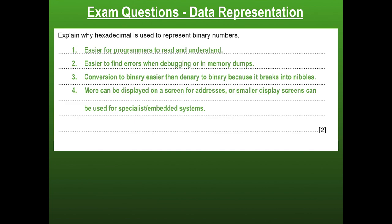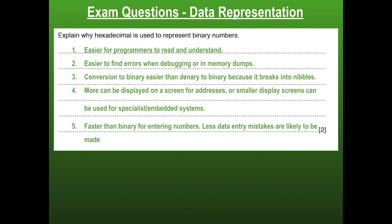Hexadecimal also allows you to display more on screen, or display more on smaller screens — such as embedded systems like washing machines where a short code represents an error. For example, I had a washing machine that would show C24 meaning I needed to clean my lint tray. It's also much faster for data entry and makes fewer mistakes — entering 73964 is a lot easier than a long string of ones and zeros.